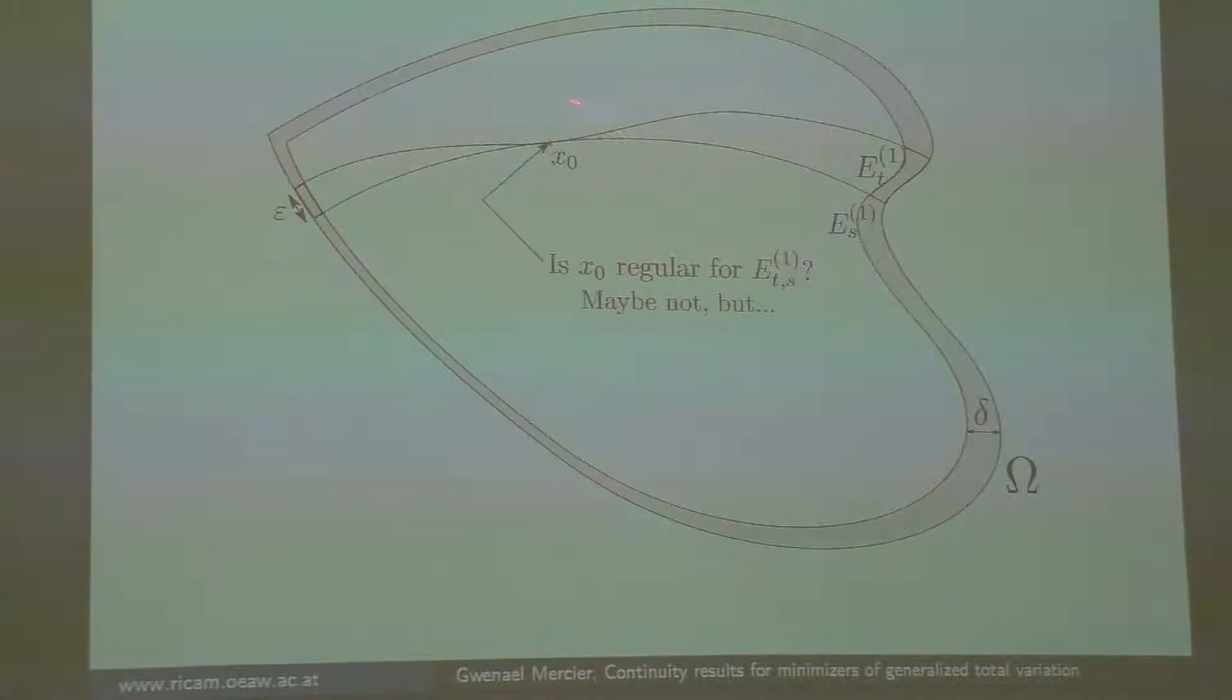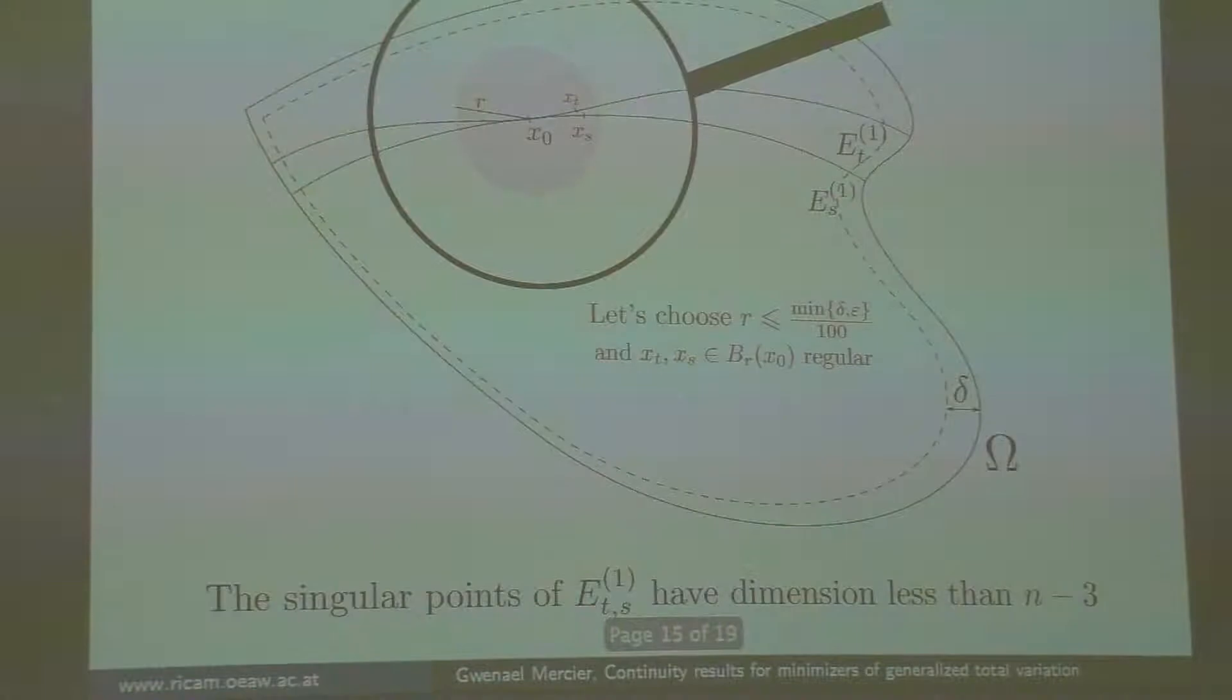Then I look at this point. I saw before that if the level sets are regular, at this point they are graphs that satisfy an elliptic equation. I have a strong maximum principle, so I'm happy. But that I don't know. What do I know about the smooth points of a prescribed mean curvature surface? I know that their dimension is less than n-3, so the singular points have dimension less than n-3, meaning the good points are everywhere, and there are really a lot of them. What I do is I select a very small r, which is much smaller than the diameter of my boundary layer, and I pick in this ball two points where the two level sets E_t and E_s are smooth.